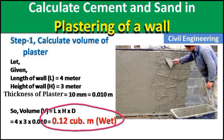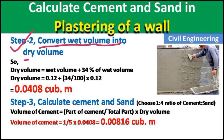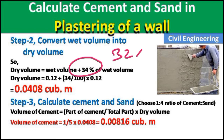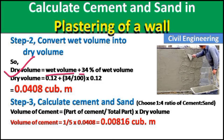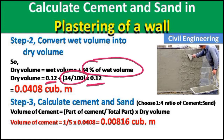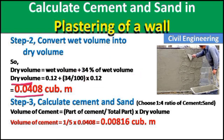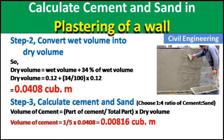In step number two, we convert wet volume into dry volume. To do this, we add about 32% to 34% extra to the wet volume. Our wet volume is 0.12 m³. Dry volume = 0.12 + (34/100 × 0.12) = 0.12 + 0.0408, giving a total dry volume of 0.1608 cubic meters. We will use this value to calculate the quantity of cement and sand.